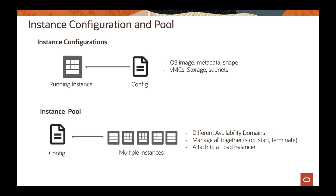So why do you need an instance configuration? Well, with that information it's easy for you to replicate multiple instances. What I'm talking about now is how you can hook that up to an instance pool. Using that configuration, you can deploy multiple instances — two instances, all the way to 10, 20, 25 — and you decide the size of the pool you want when creating your multiple instances.